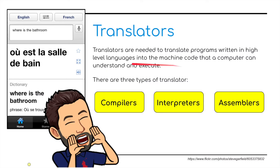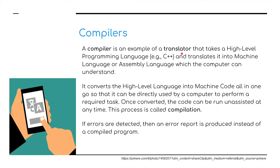The second part: translators. I'm not talking about translators such as translating French into English — I'm talking about the three types of translators needed by a computer: compilers, interpreters, and assemblers. These all turn high-level or assembly language into machine code. A compiler is a translator that takes a high-level programming language, such as C++, and translates it into machine language — or sometimes assembly language — which the computer can understand. It converts the high-level language into machine code all in one go, so it can be directly used by a computer. Once converted, the code can be run unassisted at any time. This process is called compilation. If errors are detected, an error report is produced instead of a compiled program.